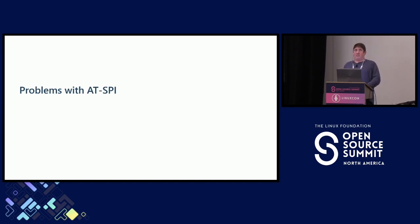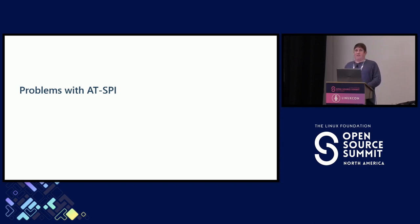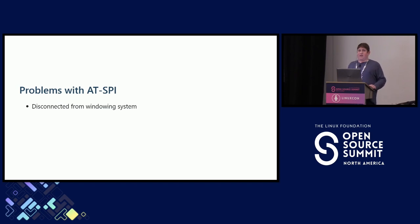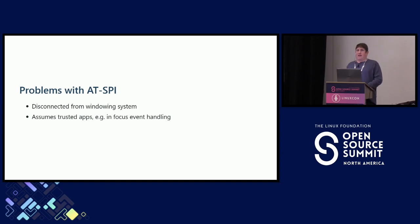There are problems with ATSPI, particularly as the free desktop ecosystem has been changing in recent years with the rise of the Wayland windowing system and security sandboxing technologies such as Flatpak. One general problem with ATSPI is that there is no direct connection between the ATSPI accessibility tree and the windowing system. So there is nothing saying that this node in the accessibility tree is coming from that X window or Wayland surface — they are just running in parallel and disconnected from each other. One consequence of that is that the ATSPI accessibility model assumes trusted applications.